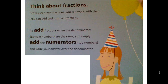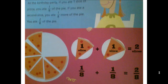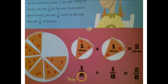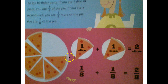Think about fractions. Once you know fractions, you can work with them. You can add and subtract fractions. To add fractions when the denominators are the same, you simply add the numerators and write the answer over the denominator. For example, if we have one-eighth of a piece of pizza plus another one-eighth, we now have two-eighths. The denominator stays the same. One plus one is two — we have two of the eight now, not two of sixteen.